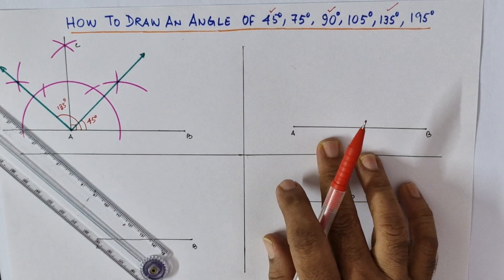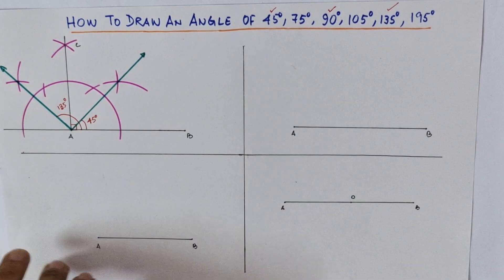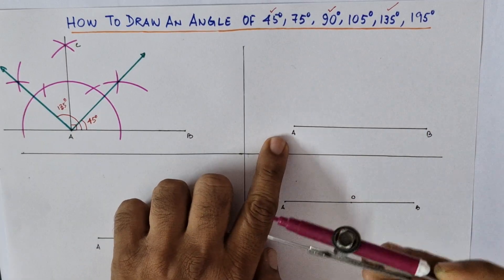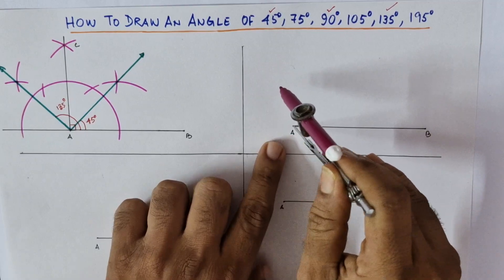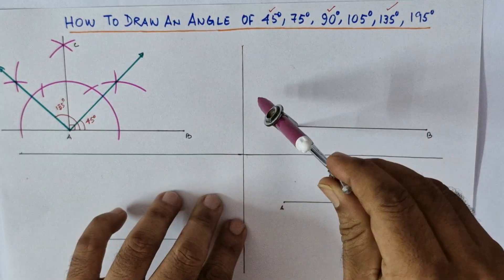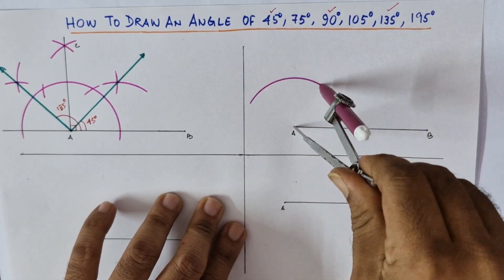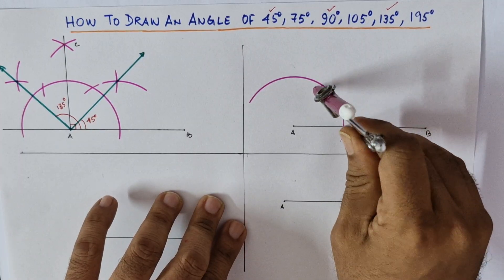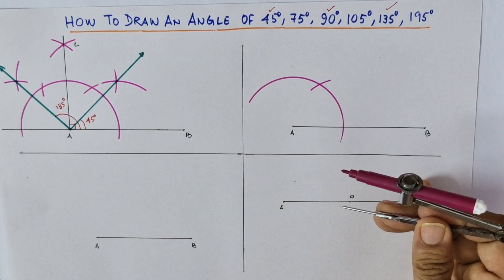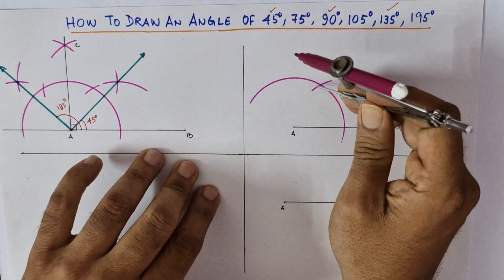We have seen how to draw 45, 90, and 135. Let's come to the second section — we will see how to draw 75 degrees. I have already drawn a line segment. Take A as center and draw a 60 degree angle, as we have seen in earlier classes. So if we join them it will be 60 degrees.